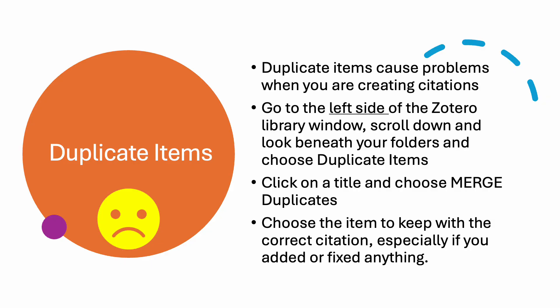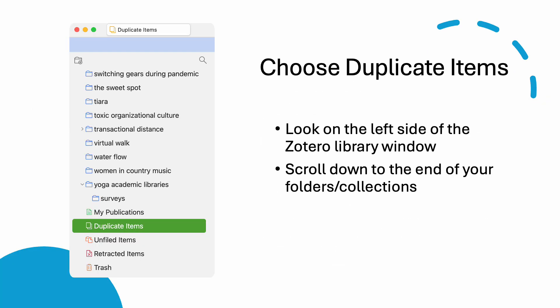Click on a title and choose Merge Duplicates. Choose the item to keep with the correct citation, especially if you added or fixed anything.